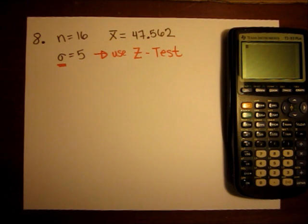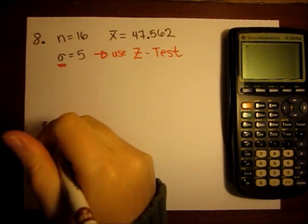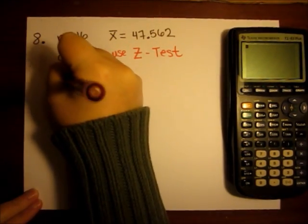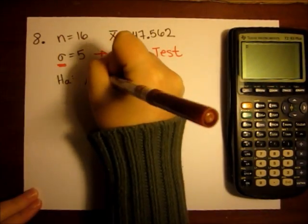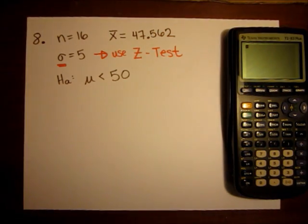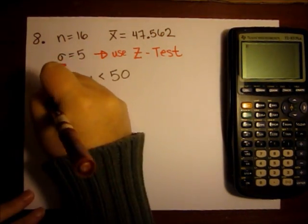We want to test if the null hypothesis of mu equals 50 against the alternative of mu is less than 50. The way I would do this is I would find my p value.